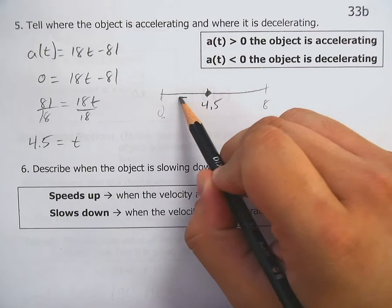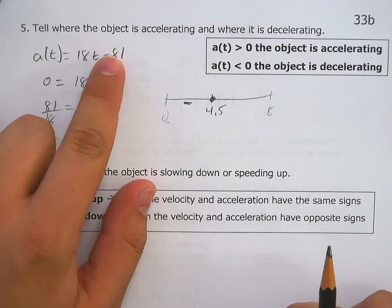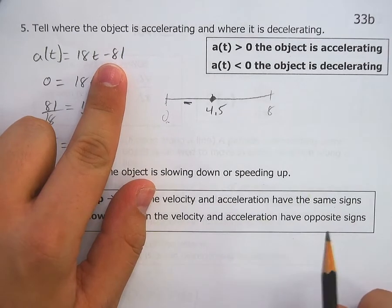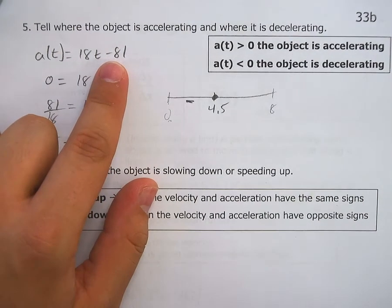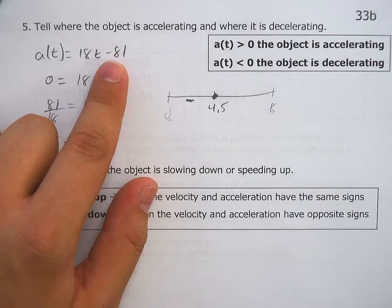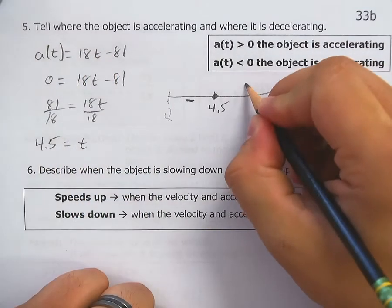18 times zero is zero, minus 81 is a negative value. What if you plug in a number to the right of 4.5, like eight, for example? 18 times eight minus 81 is going to be very positive.